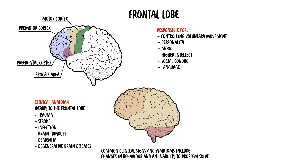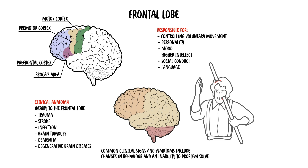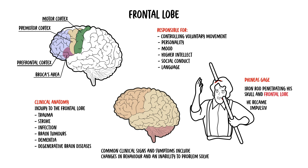Injury to the motor cortex presents with contralateral weakness. These personality changes were beautifully documented in the case of Phineas Gage, an American railroad construction foreman. Gage suffered a severe brain injury from an iron rod penetrating his skull through his frontal lobe, of which he miraculously survived. After the accident, Gage's personality completely changed. Where once he was a competent, forewarned, and reasonable person, he lost his inhibitions and became impulsive, inappropriate, violent, indulging, and displayed poor problem solving.